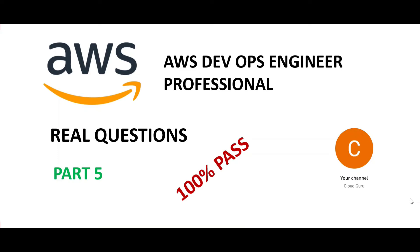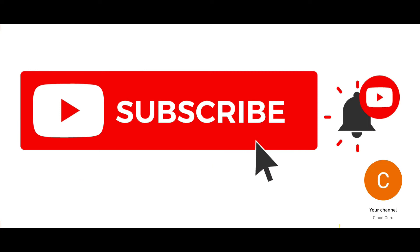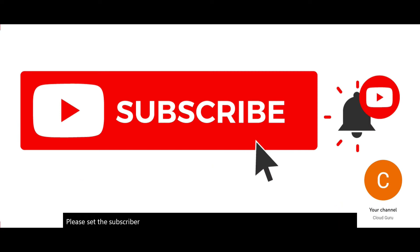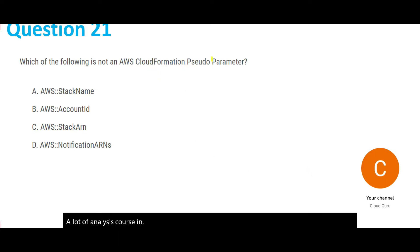Hi, welcome to Part 5 of DevOps Engineer Professional Certification real exam questions. Please hit the subscribe button and click the like button — a lot of effort goes into preparing these questions and answers. Let's look at this question: which of the following is NOT a CloudFormation pseudo parameter?